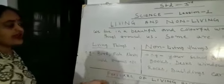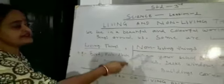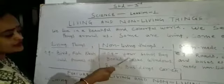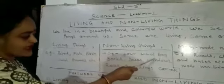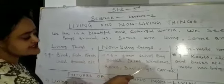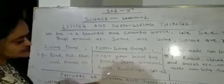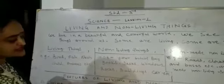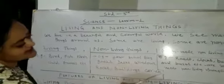Here are some examples of living things: bird, fish, plant, child, animal, etc. And here are some examples of non-living things: your school bag, books, desks, windows, rocks, building, car, etc.